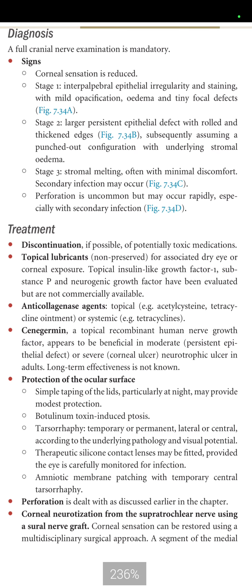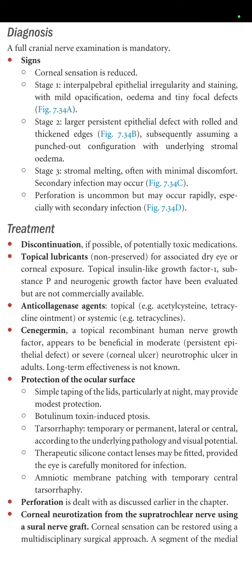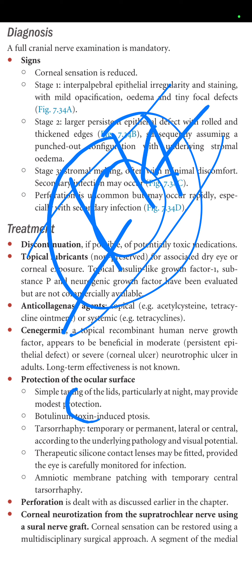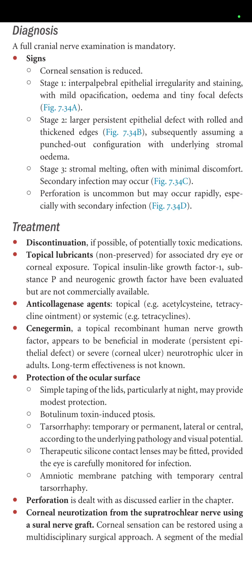Protection of the ocular surface includes simple taping of the lids, particularly at night, for modest protection. Botulinum toxin-induced ptosis, tarsoraphy (temporary, permanent lateral, or central depending on underlying pathology and visual potential), therapeutic silicone contact lenses with careful monitoring for infection, and amniotic membrane patching with temporary central tarsoraphy are all options to prevent the cornea from drying and allow epithelial defect healing.